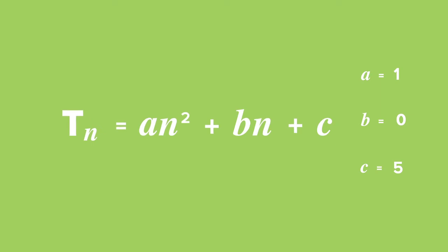We can now complete our general term for this quadratic sequence. a has a value of 1, so the general term becomes n² plus b had a value of 0, so we've got no term in n, plus c, which is 5. So we get a quadratic formula with general term n² plus 5.